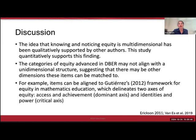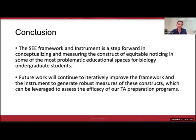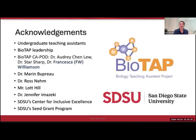One example is Gutierrez's 2012 Framework for Equity in Mathematics Education, which delineates two axes of equity: the access and achievement axis, and the identity and power axis. Overall, the C Framework and Instrument is a step forward in conceptualizing and measuring the construct of equitable noticing in some of the most problematic educational spaces for biology undergraduates. Future work will continue to iteratively improve the framework and instrument to generate robust measures of these constructs, which can be leveraged to assess the efficacy of UTA preparation programs. Thank you, everyone—I would happily take your questions.